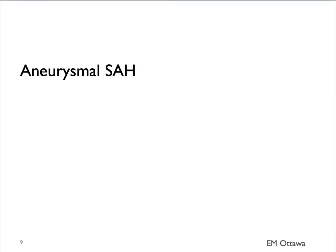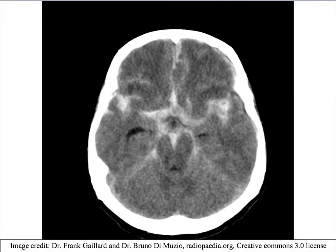What about a subarachnoid hemorrhage that comes from an aneurysm? Since most aneurysms arise from the circle of Willis, when there is an aneurysmal rupture, the blood will be around the circle of Willis on the CT scan — like this. You can see the blood outlining the circle of Willis and the CSF space around it very well.